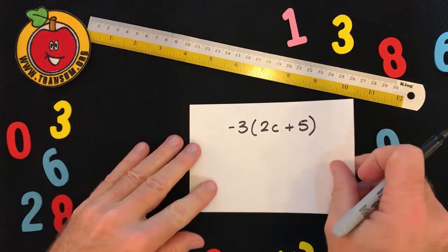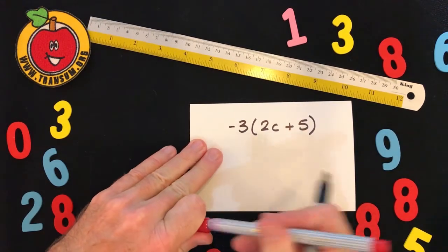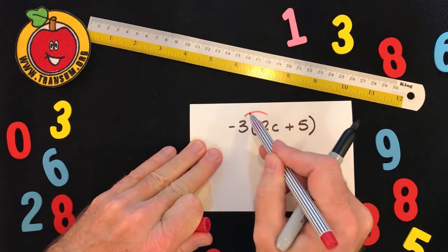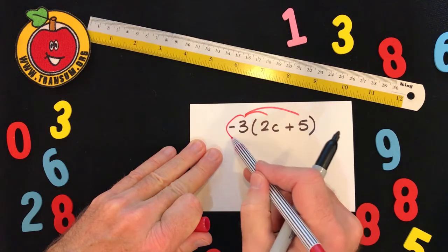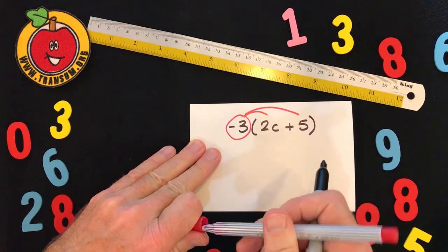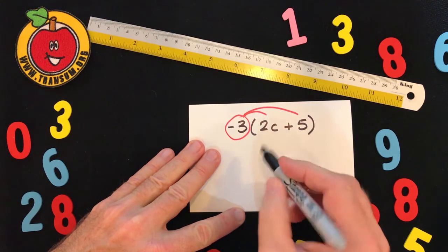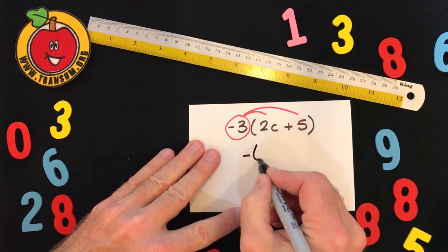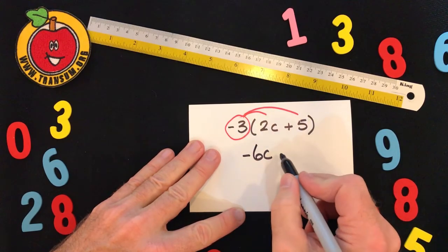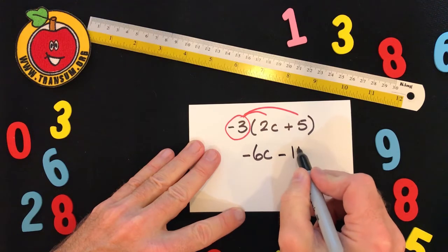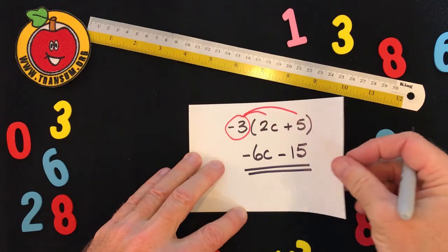Now, what about if we have a negative number outside the brackets? So here we have a negative three, and that has to be multiplied by the 2c and the five. But remember, it's the whole of the negative three that you need to consider, not just the three itself. So negative three times 2c is minus 6c.